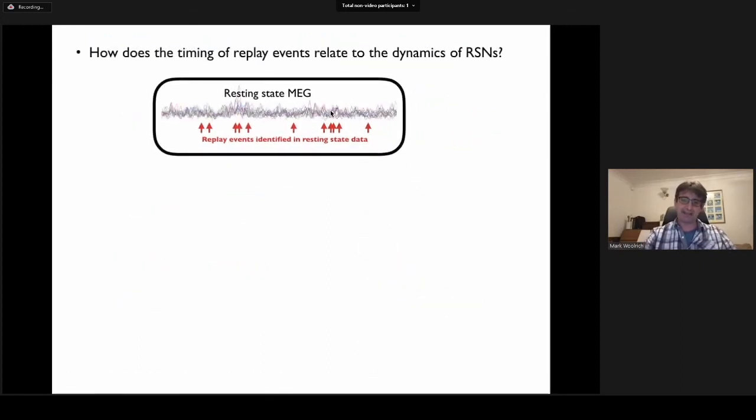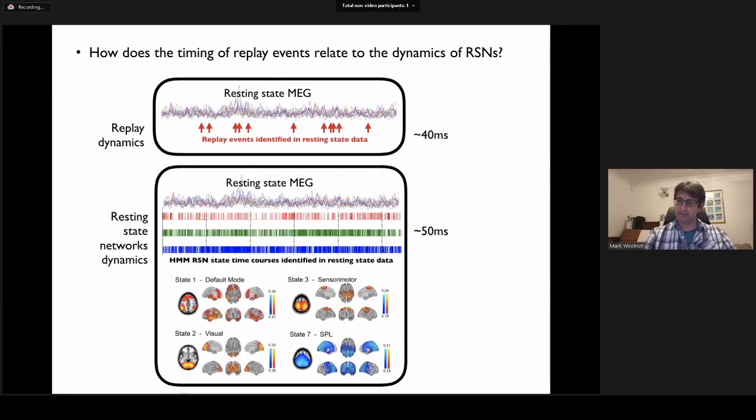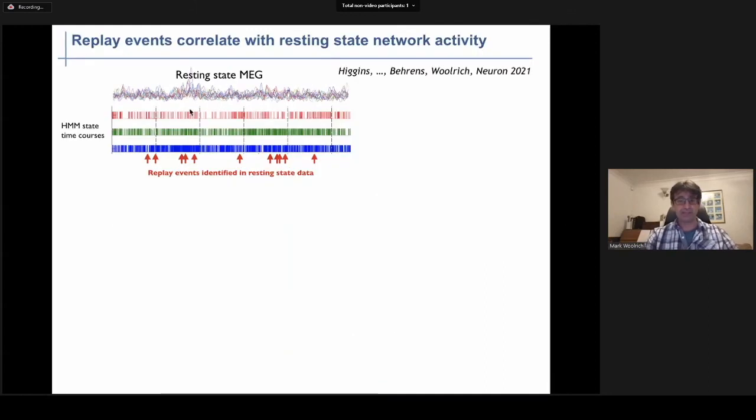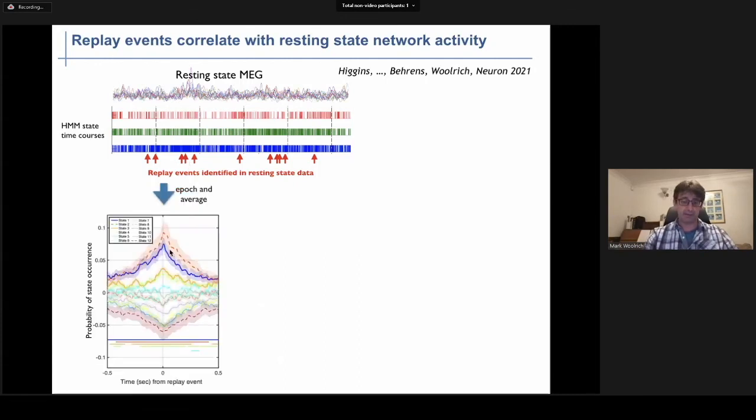We wanted to take this ability to identify replay events in the resting state MEG and link those replay events in terms of their timing to the dynamics we can extract from the same resting state data about the large-scale resting state networks. This will allow us to essentially link together the field of RSNs to the field of replay. There's reason to think this is possible because we can access both of these things on similar timescales. We essentially take the network state time courses inferred on the resting data and align them to the replay events also inferred on the same data.